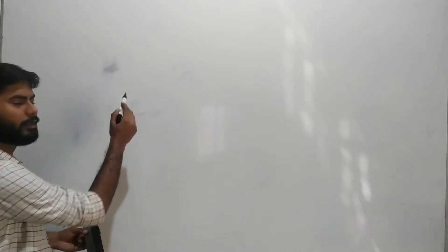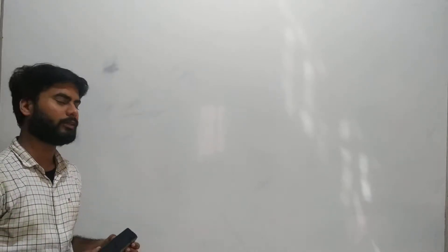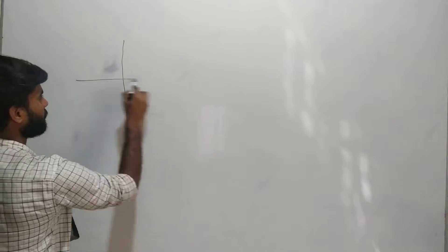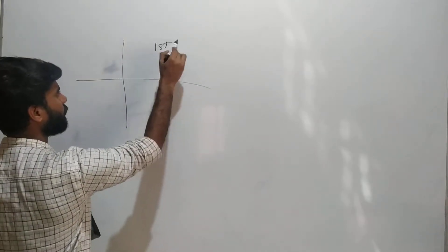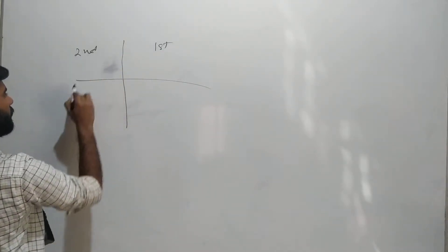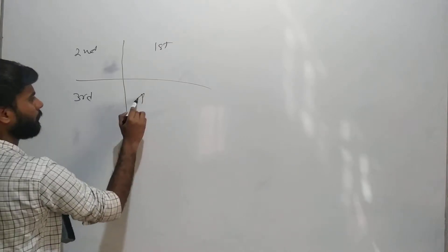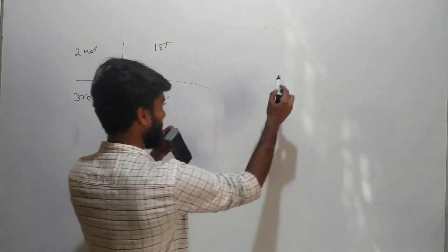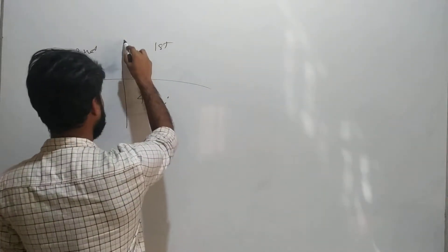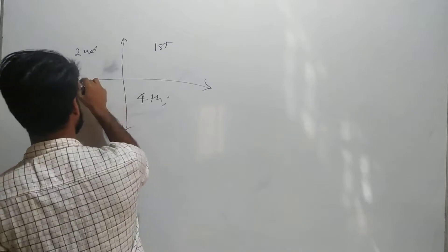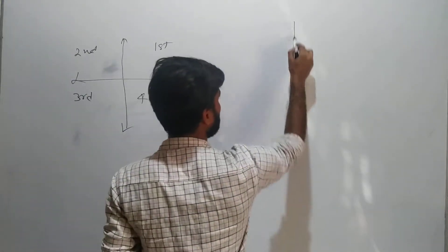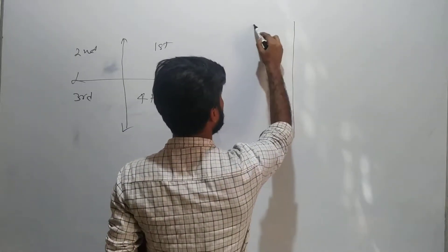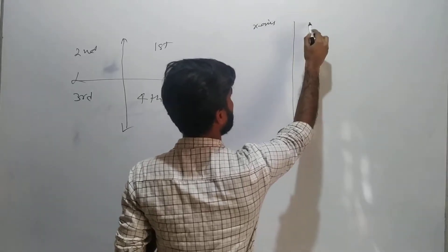Hello guys. Today I will be discussing the change of trigonometric ratios in the different quadrants — the first quadrant, second, third, and fourth. As we discussed in the previous video, how it changes for the y-axis (complementary angles) and for the supplementary angle — so for the x-axis and for the y-axis.